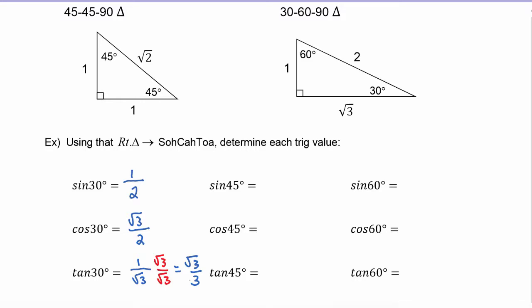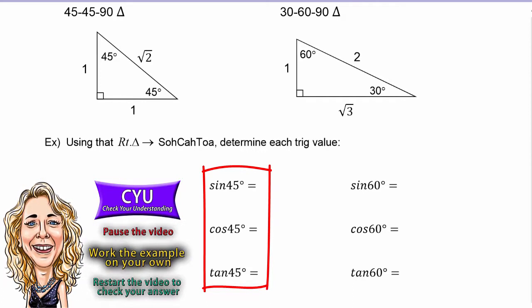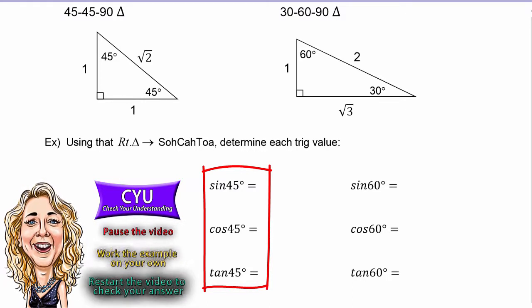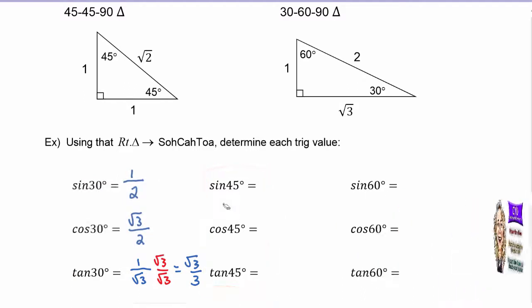Next up we can find the sine, cosine, and tangent of 45 degrees. It's CYU time — pause the video, work the example on your own, then restart the video to check your answer. Okay, let's see how you did. For sine of 45 degrees, we can use either one of these angles — it doesn't matter which one, we'll get the same answer.